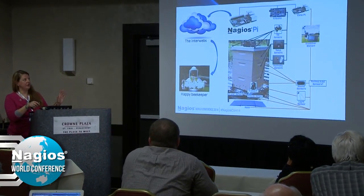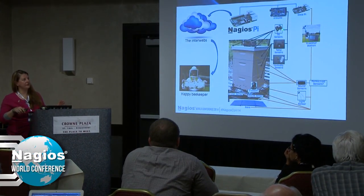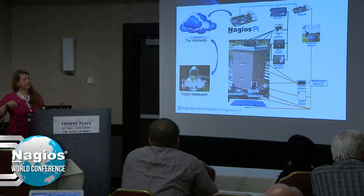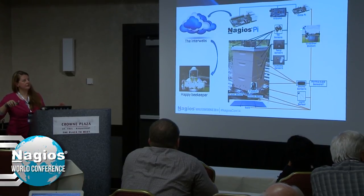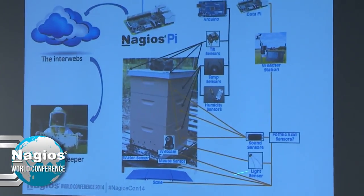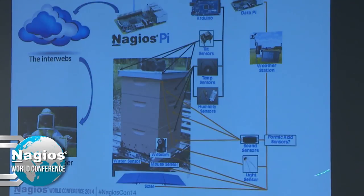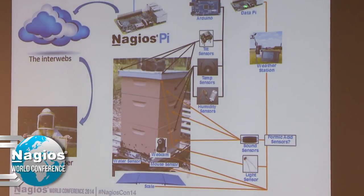Question from audience: One of the things you talked about was Nagios Pi and some other Pi device — what do those do? Those would collect the specific information. I'm new to all this, but I believe an Arduino would be best used to collect the sensor information, while the Data Raspberry Pi would be good to collect weather information, light sensor data, scale data, and things like that. And the Nagios Pi would collect information from both the Arduino and the Data Pi.